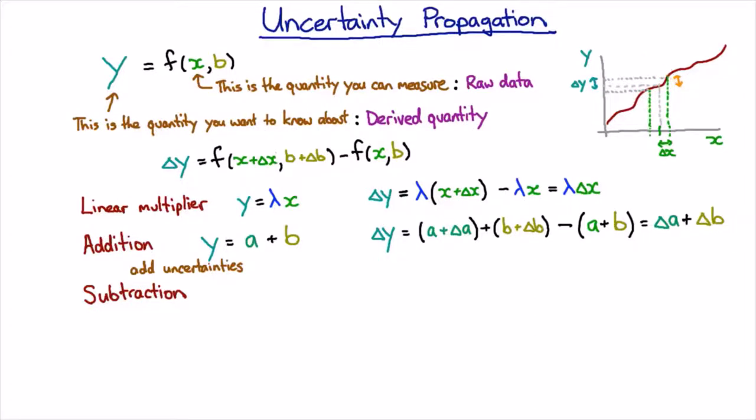So what we really should be doing is we should be putting an absolute value around whatever thing we get out of here, and that absolute value will make sure that our uncertainty comes out to positive.